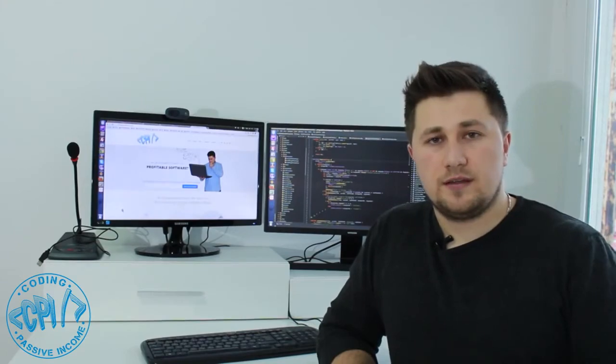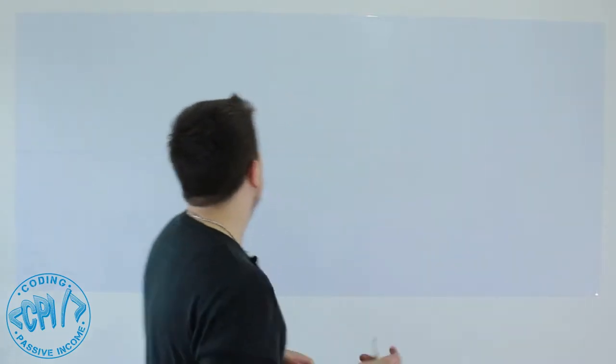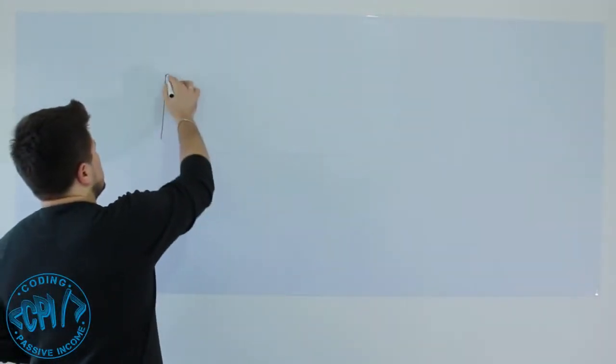Let me explain front-end and back-end web development with an example. Let's imagine we want to create a website where people will register. The first thing we need to do is create an interface where people will be able to submit information so we can store it to a database.